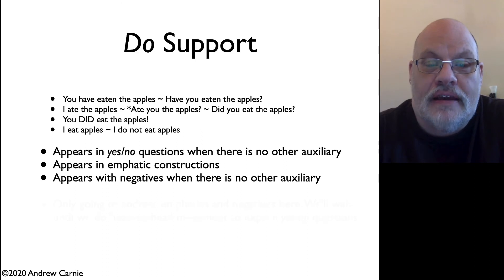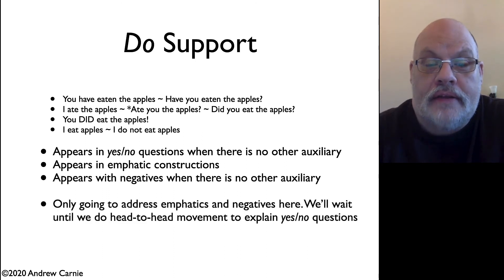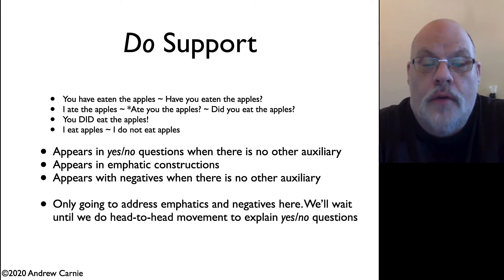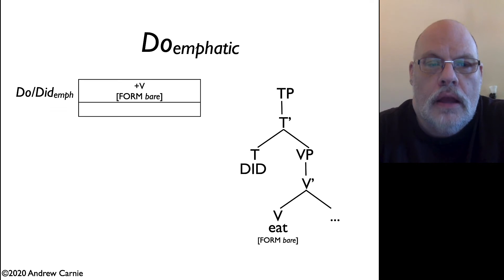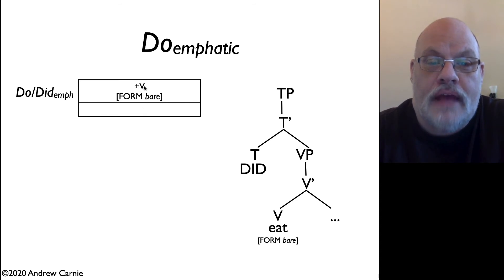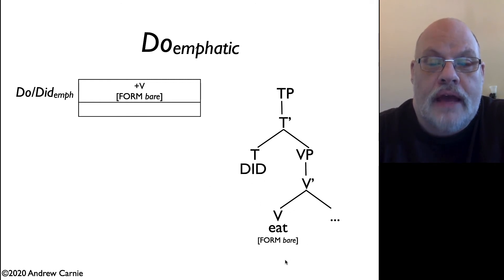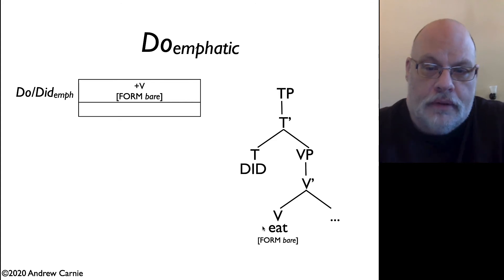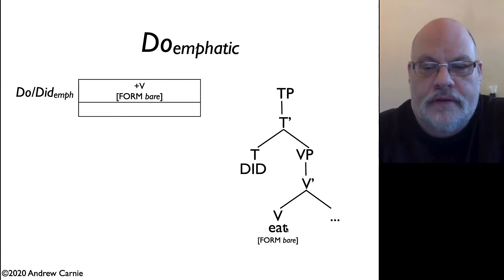We're going to account for the second two cases — emphatics and negatives here — and we'll return to the issue of yes/no questions when we do head movement. The emphatic do has the requirement in its theta grid that it takes a plus-V element that we talked about in the previous video, and it requires that the following form be bare — so it can't take any kind of inflection. For example, it can't take an -ed suffix or an -s suffix. It has to have a bare form that follows.